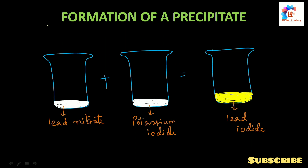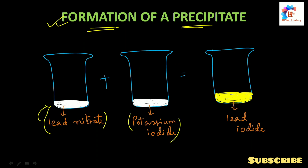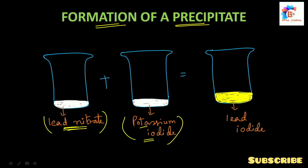The second characteristic is the formation of a precipitate. Here we have a beaker with lead nitrate, which is basically white, and potassium iodide, which is also white. When we mix them, a yellow-colored precipitate of lead iodide is formed.